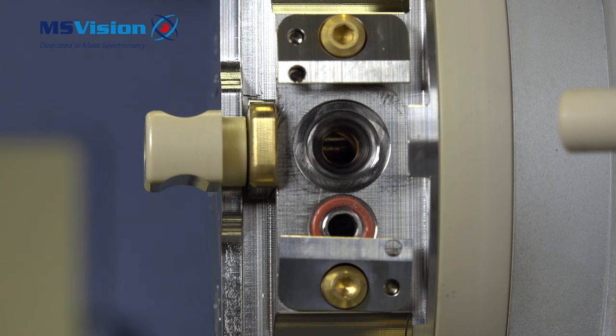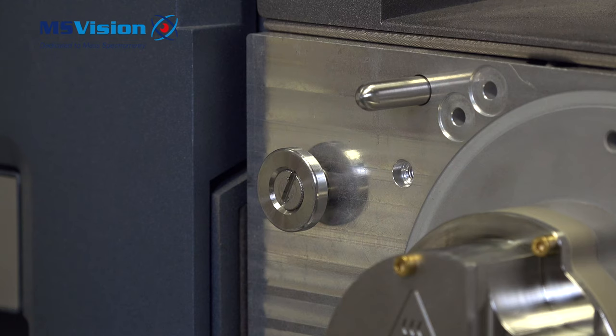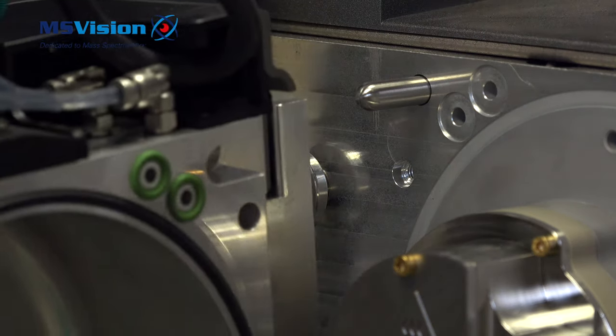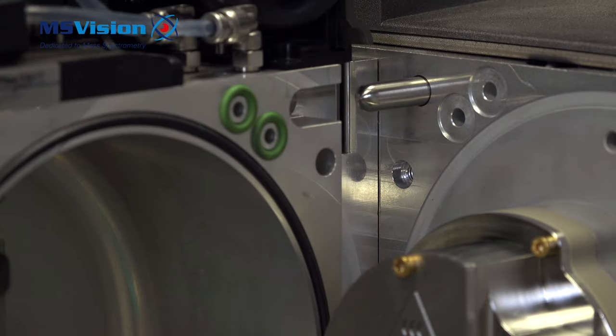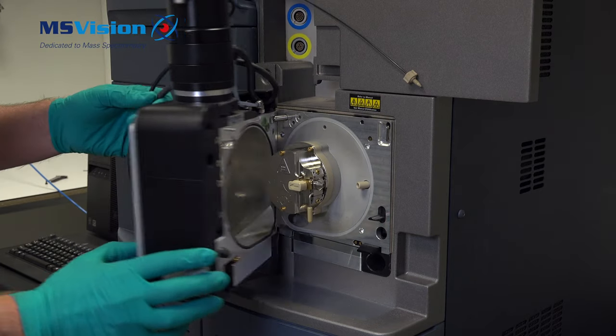Do not do this when the system is under vacuum because your turbo pumps will be heavily stressed and may become damaged. Line up the hinges and push down. Then close the enclosure door.